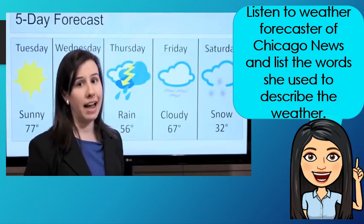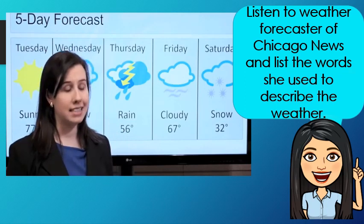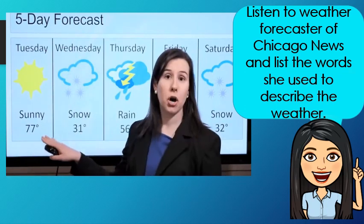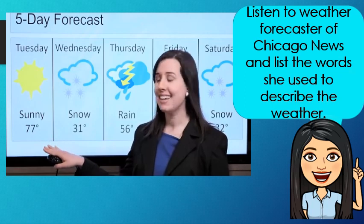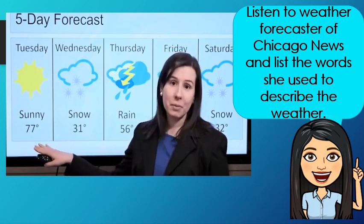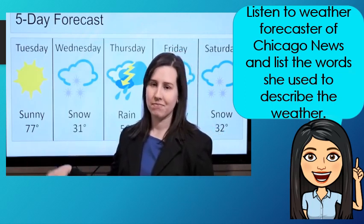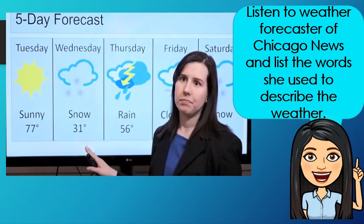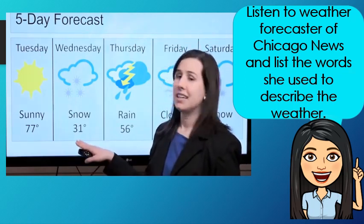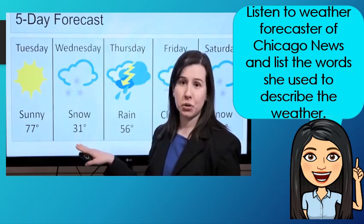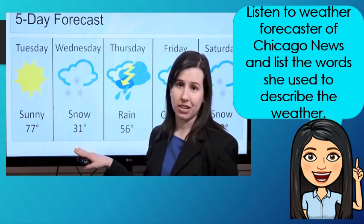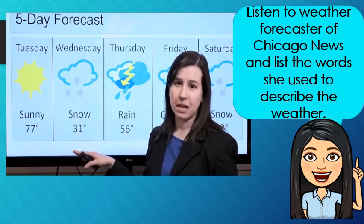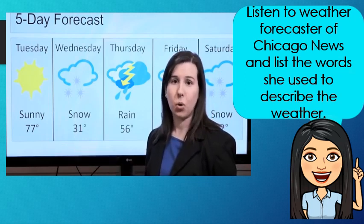Let's look at our five-day forecast. Tomorrow, Tuesday, it will be sunny and warm — 77 degrees tomorrow. Then, on Wednesday, it will snow. The temperature will go down to 31 degrees — a pretty cold day.